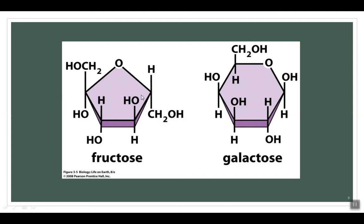Galactose is another simple sugar composed of the same elements as glucose but with a different arrangement of atoms. In the human body, most of the ingested galactose is converted to glucose. Galactose can bind to glucose to make lactose, to lipids to make glycolipids, or to proteins to make glycoproteins.